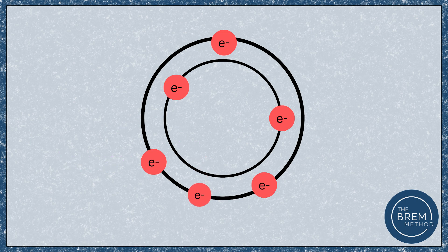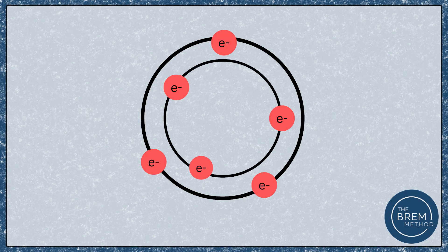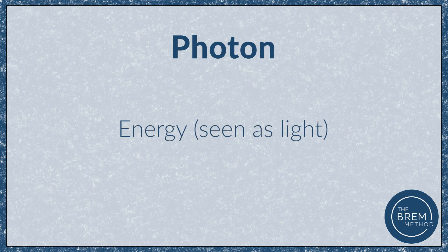Electrons can also change which shell they're in — moving from a lower energy shell to a higher one, or vice versa. The lowest energy state is called the ground state. To jump to a higher energy shell, an electron needs to absorb energy. We absorb energy to move shells outward. If we want to drop to a lower energy state, we emit energy — in the form of what's called a photon. A photon is a packet of energy, also known as light — electromagnetic radiation — and it's emitted as an electron goes from an excited state to a ground state.